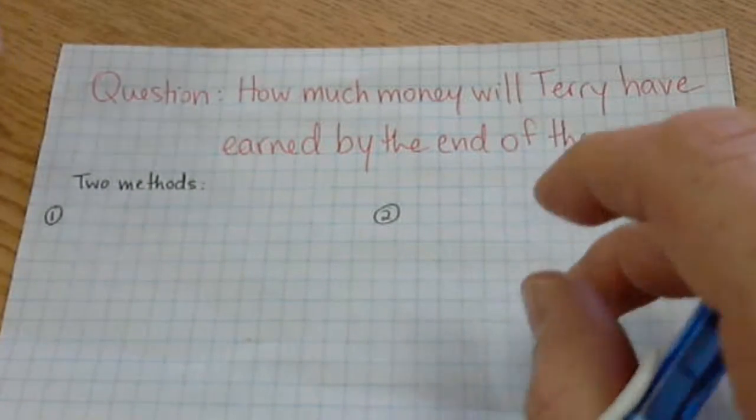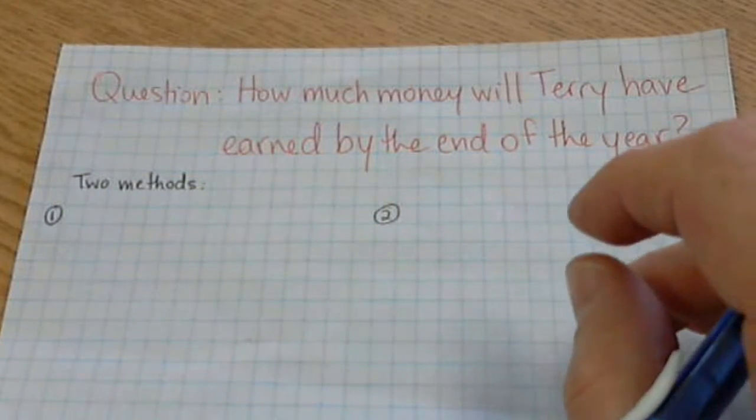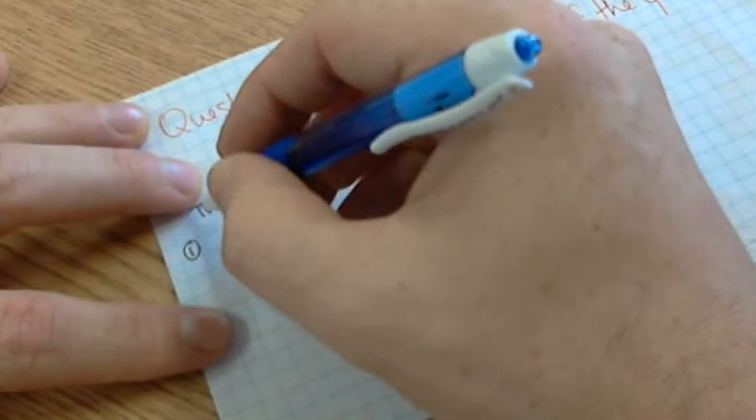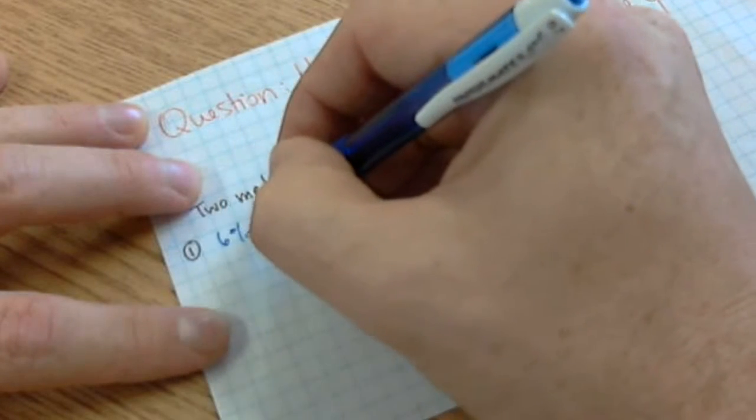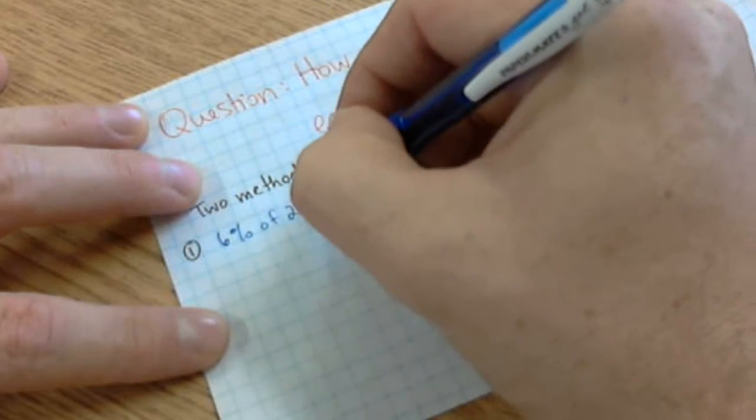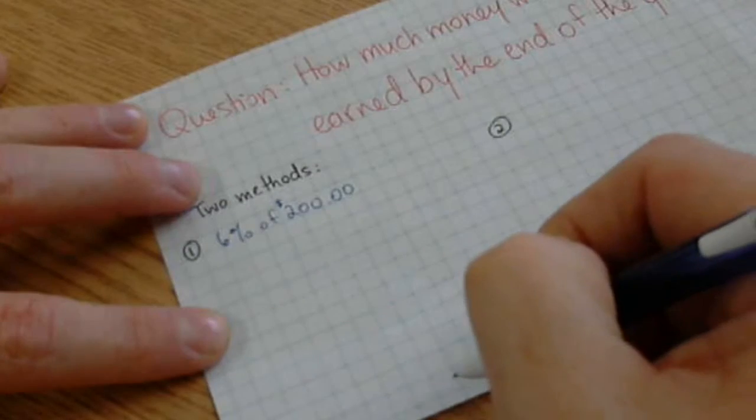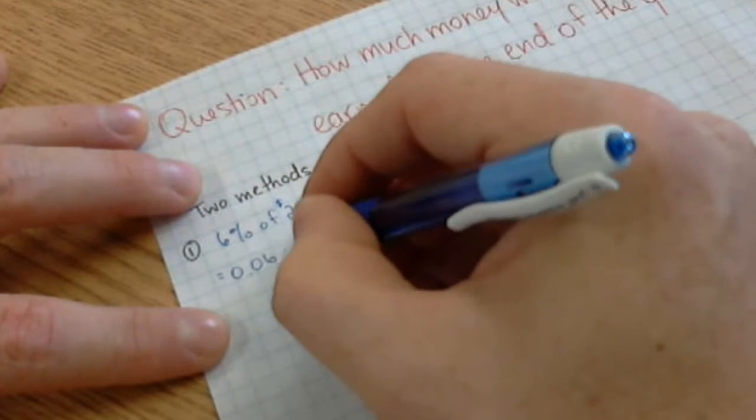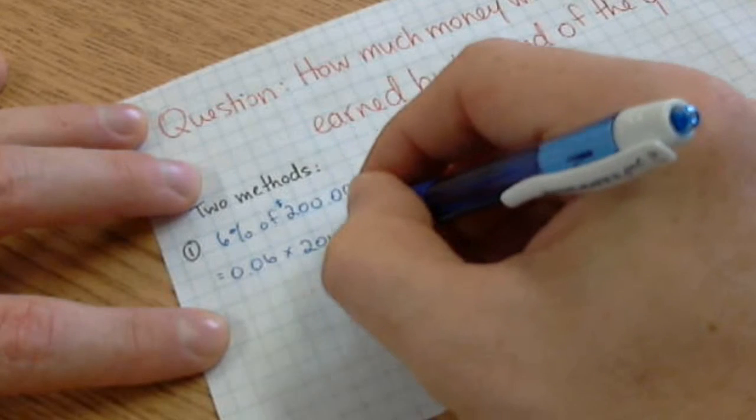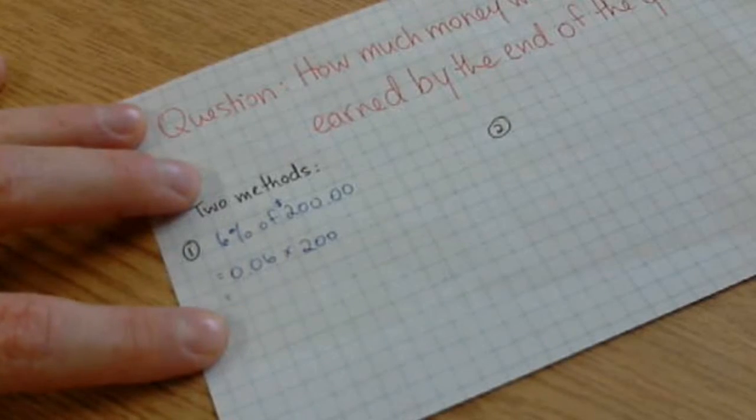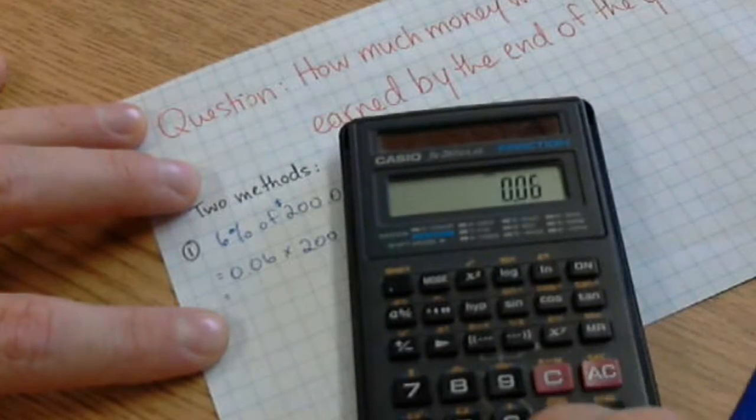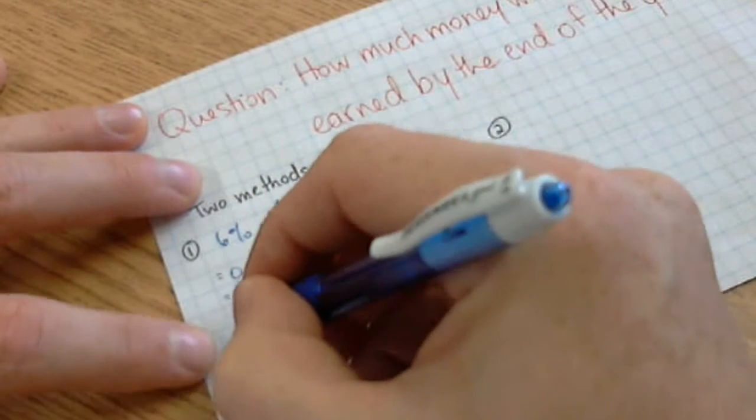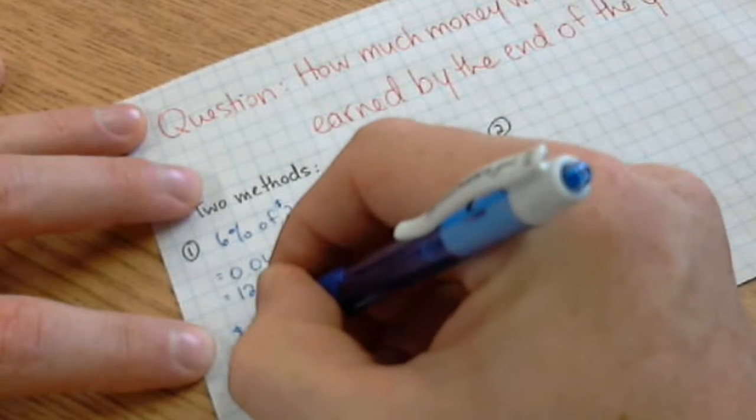There are basically two ways that we can calculate this. We can find out 6% of $200. We know that we can say 6% is 0.06 times 200. So 0.06 times 200 is $12.